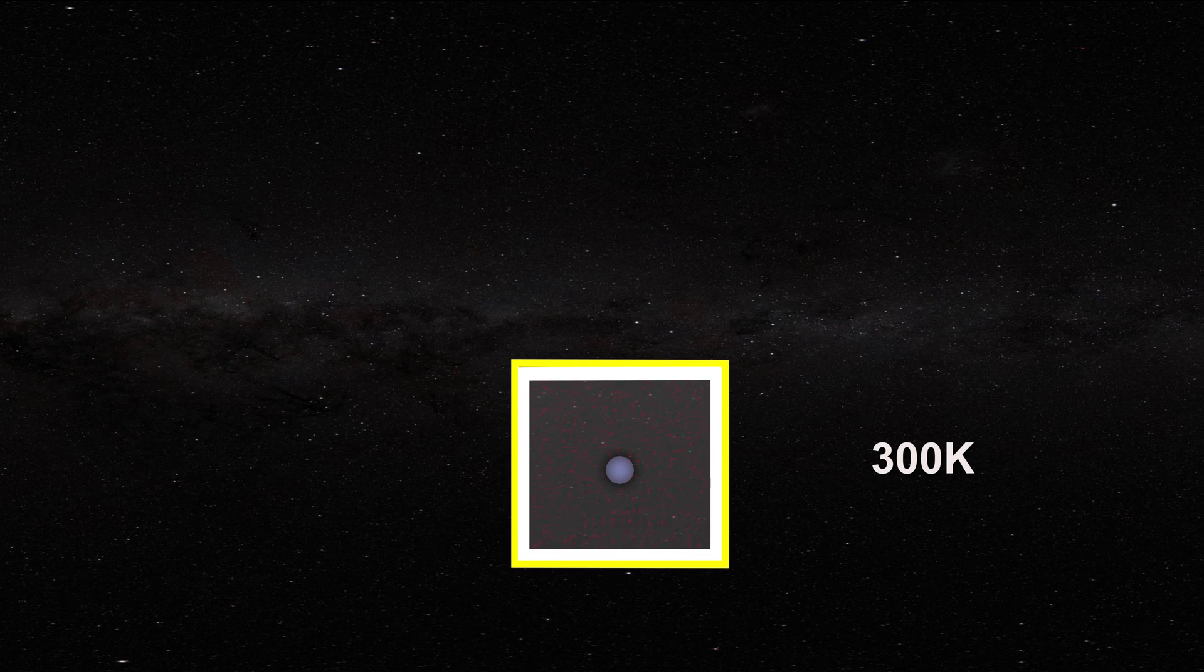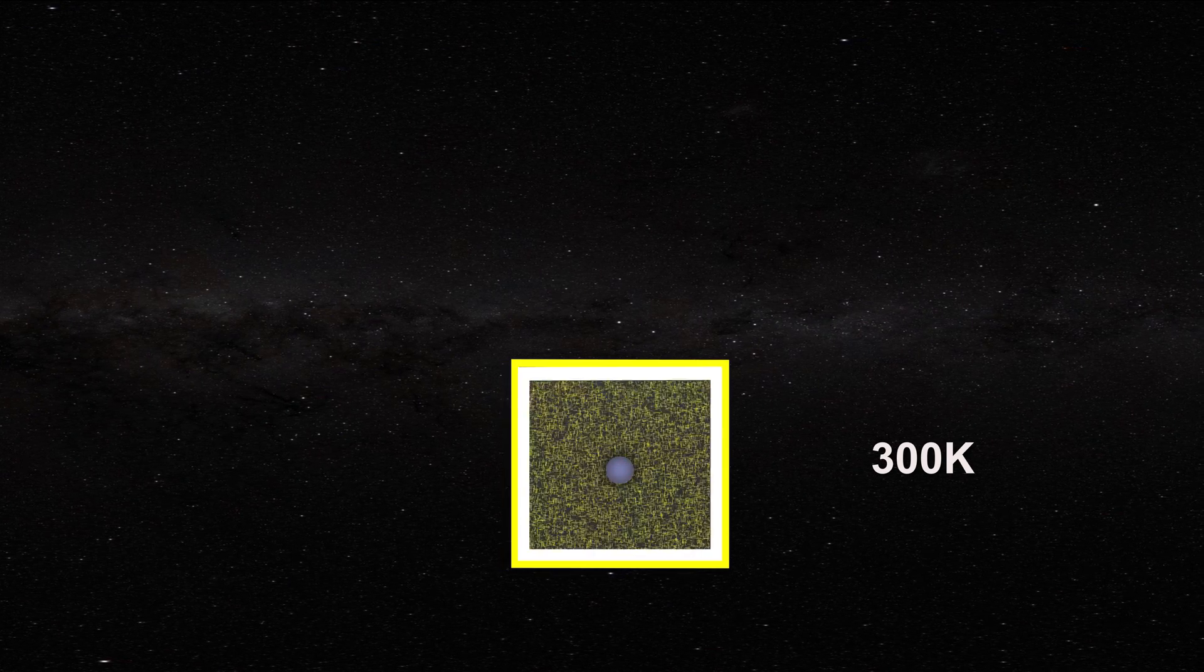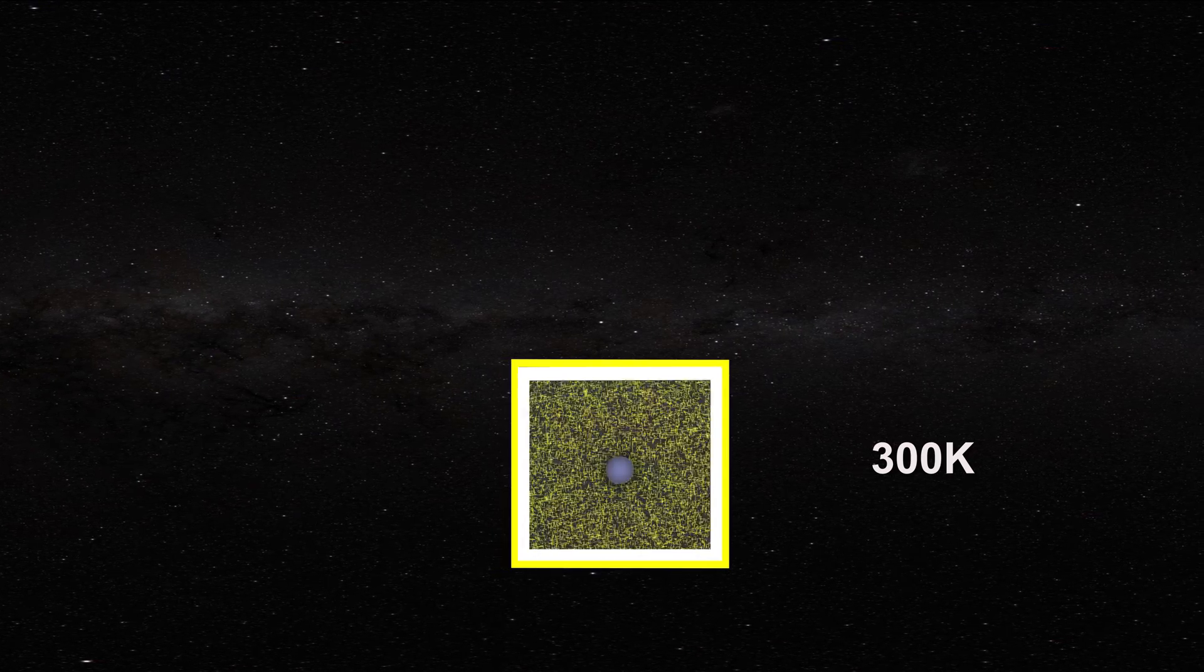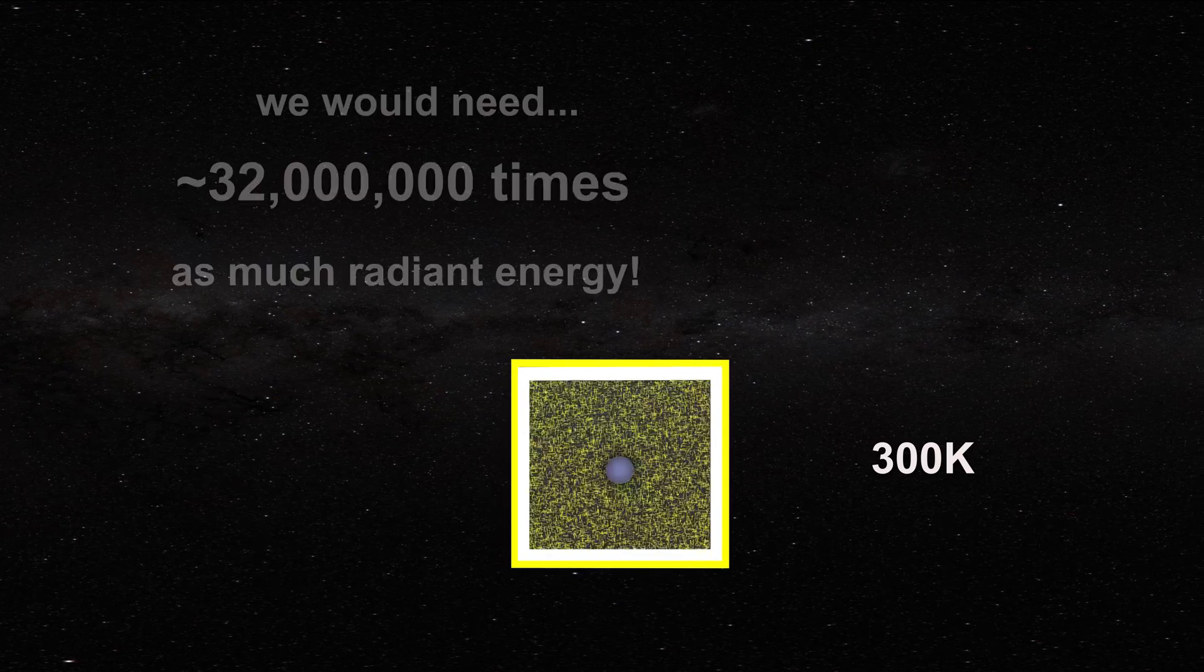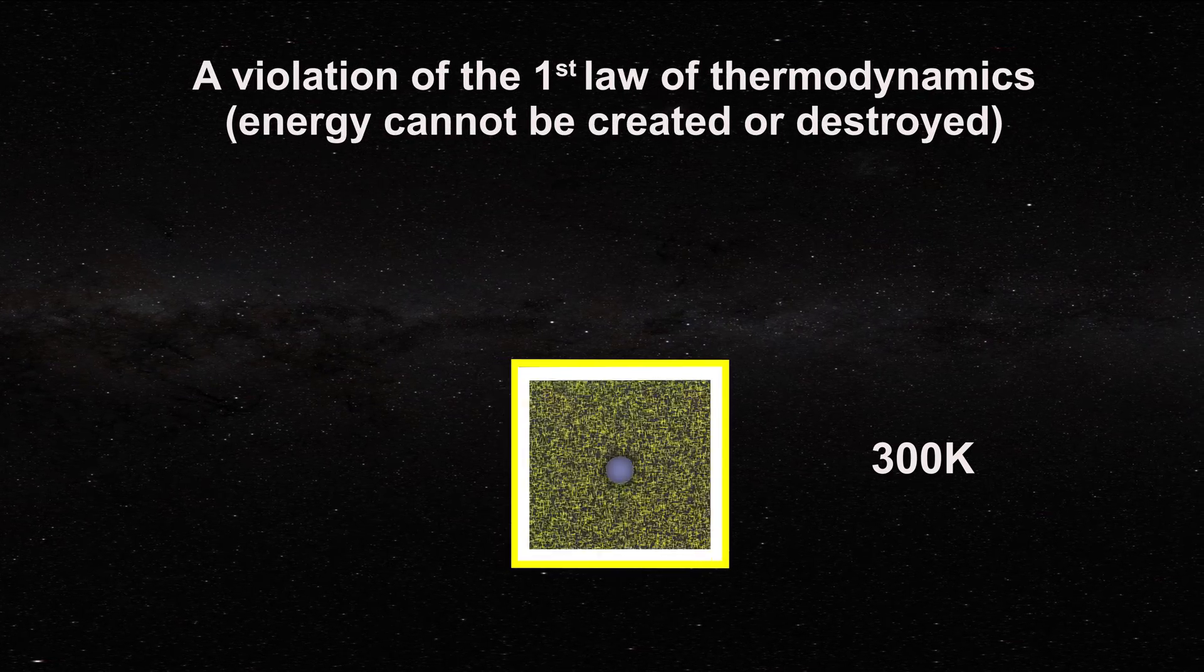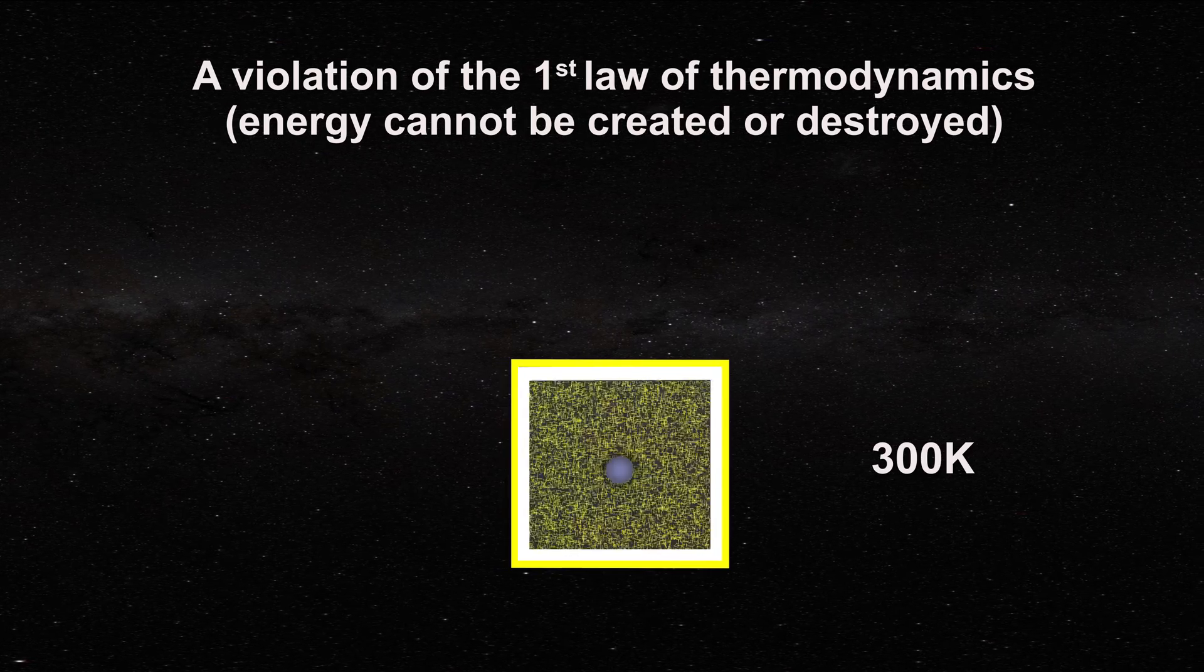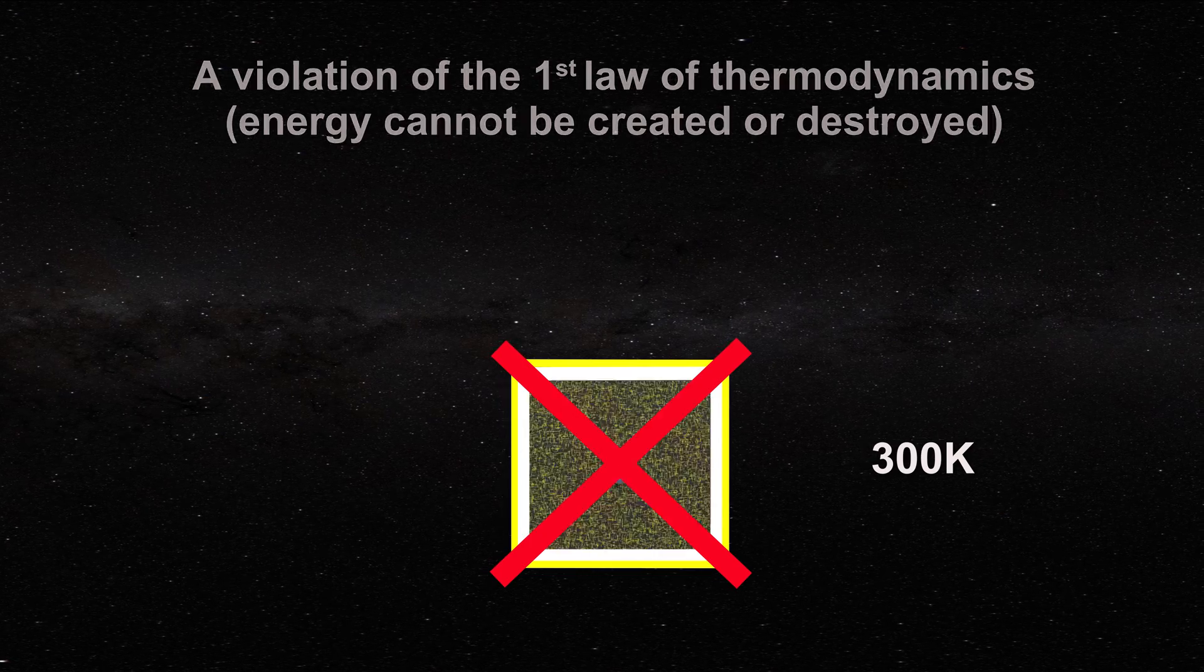Max Planck argued that the existing radiation would be converted to a new radiation field at the correct temperature. However, there would not be nearly enough photons inside the cavity to generate the radiative power given by Stefan's law at 300 kelvin. To argue otherwise is a violation of the first law of thermodynamics. It is clear that without access to the energy in the walls, the carbon particle cannot fill the cavity with black radiation at the correct temperature.